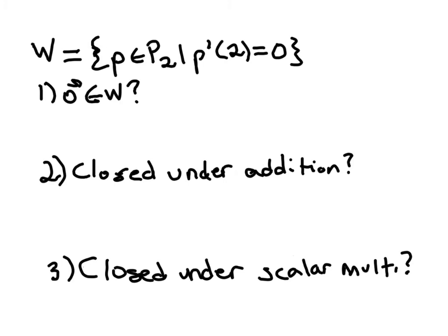So I'm going to go through these three criteria. First is the 0 vector contained in W. So if we're talking about P2, then the 0 vector in this case would be the 0 function. Actually, let me make this one here. So the 0 vector would be just the 0 polynomial, P of x equals 0.